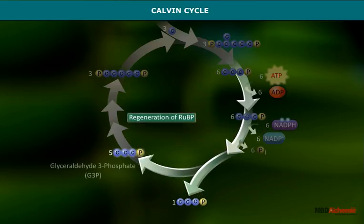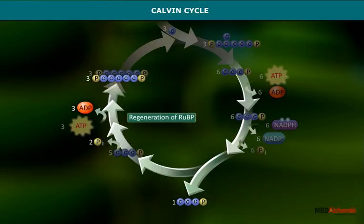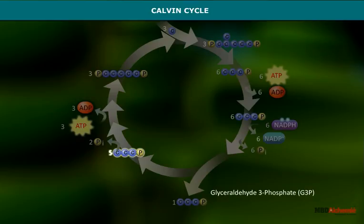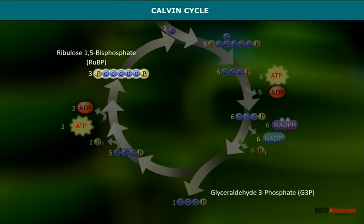In this step, ribulose-1,5-bisphosphate is regenerated. For every step of the cycle, five molecules of glyceraldehyde-3-phosphate are used to reform three molecules of ribulose-1,5-bisphosphate.